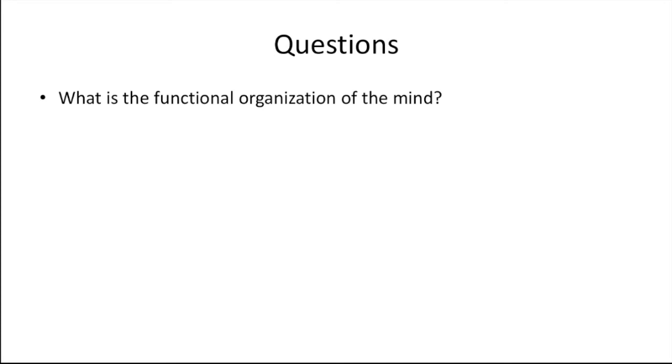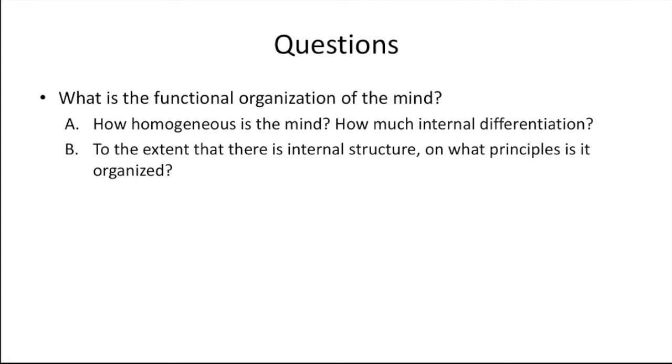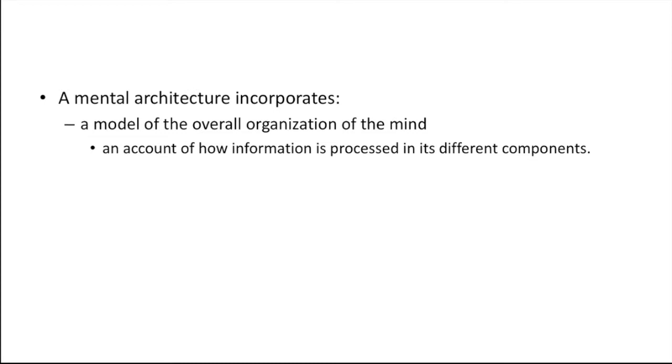This question about the functional organization of the mind can be elaborated further. So we can ask how homogeneous is the mind? How much internal differentiation is there? And to the extent that there is internal structure, on what principles is it organized? What Fodor is trying to provide is an overall image of the architecture of the human mind, which will include a model of the general organization of the mind. And this will encompass a list of the main components in the mind, as well as an account of how information is processed in those components.